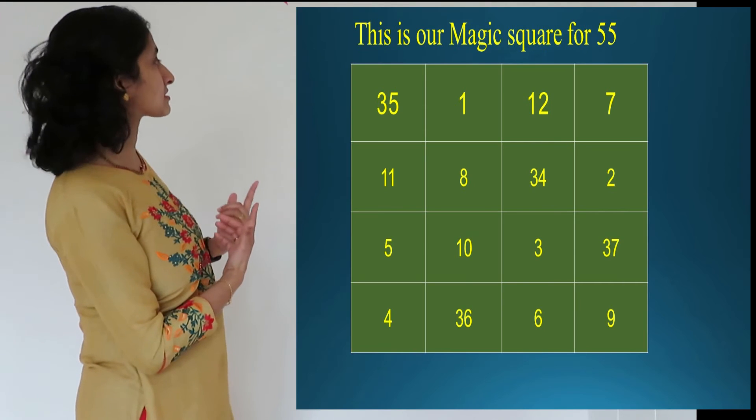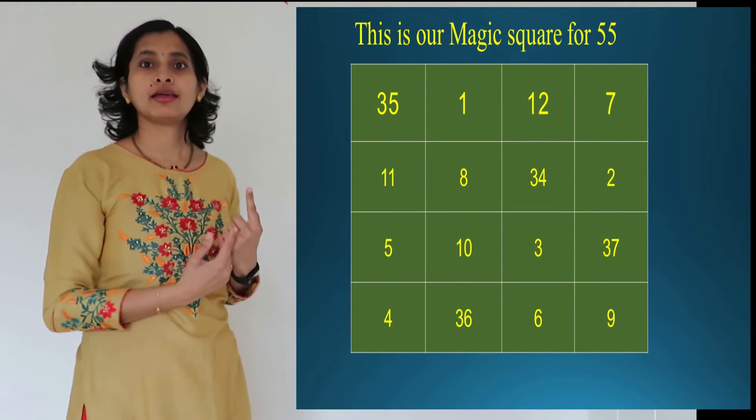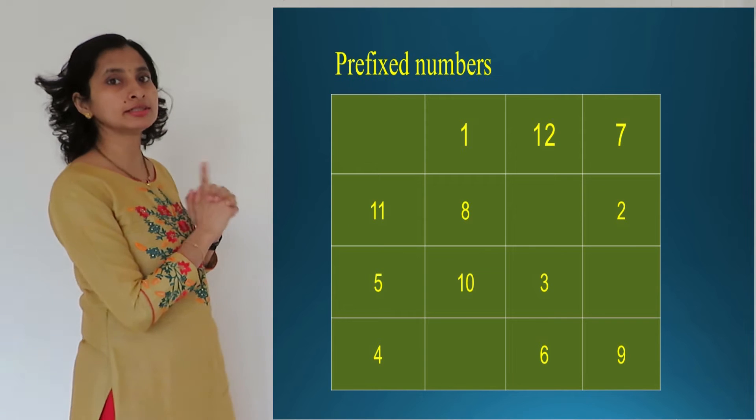So this is the magic square for the number 55. Now, time to reveal the secret. First, you should memorize some prefixed numbers. I will later give a trick for memorizing that too. Now, what are those prefixed numbers?